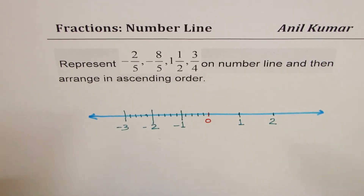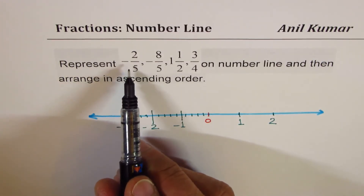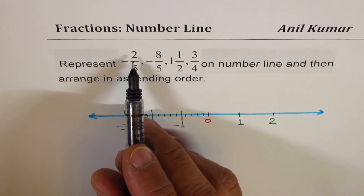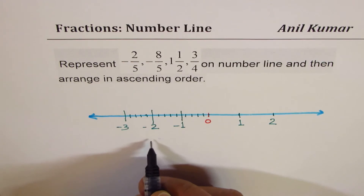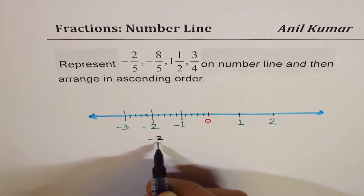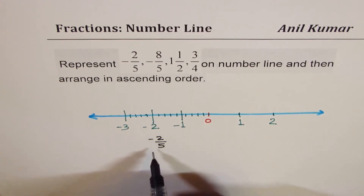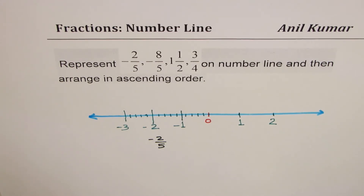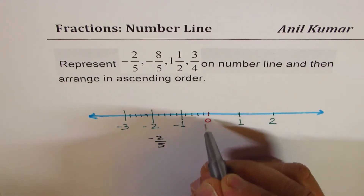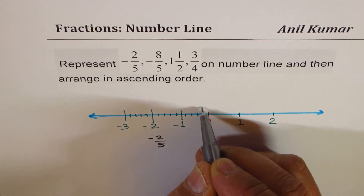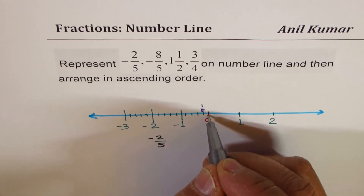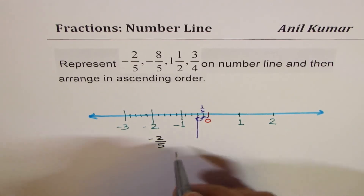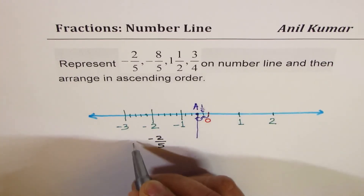Now let me do the difficult part first — the left side negative numbers. The first number is -2/5. That means we move left 2 fifths. Starting from 0, each division is 1/5, so we go 1 and then 2 — that is where 2/5 is. Let me mark this as position A, so A is at -2/5.